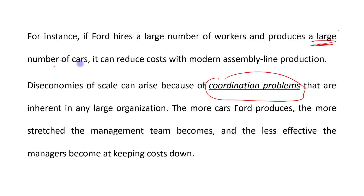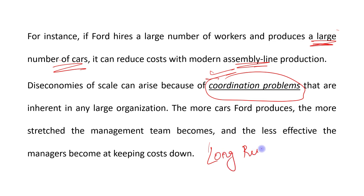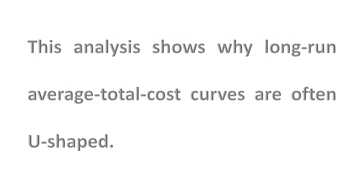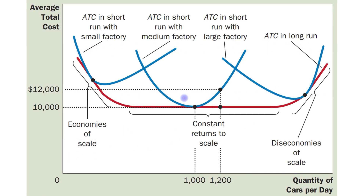When Ford produces a large number of cars it can reduce costs with modern assembly line production, but as the firm size increases it leads to coordination problems, and because of those coordination problems the long run average total cost increases. This analysis shows that long run ATC curves are often U-shaped — they first decline because of economies of scale, then become constant, and then start to increase, which represents diseconomies of scale.